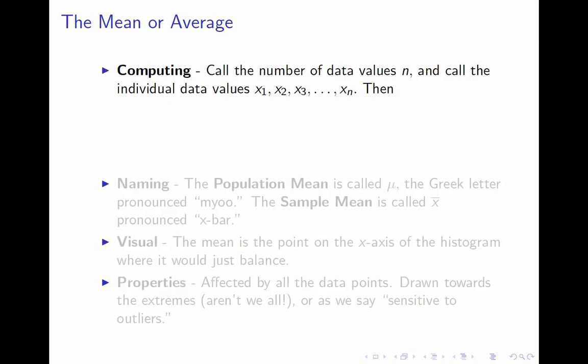Let's talk more formally about the mean. The first piece of notation: n is the variable we use to represent the number of data points. In our last example there were seven data points, so n equals seven.